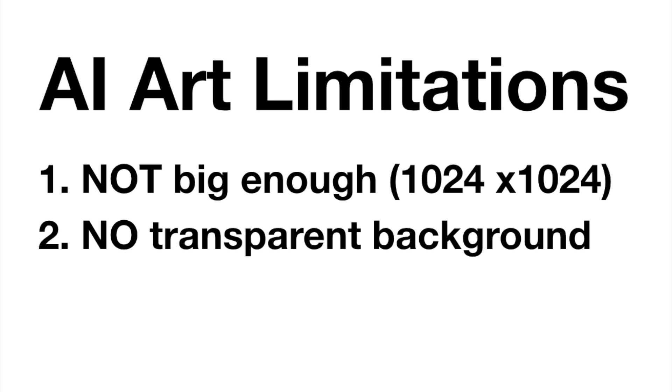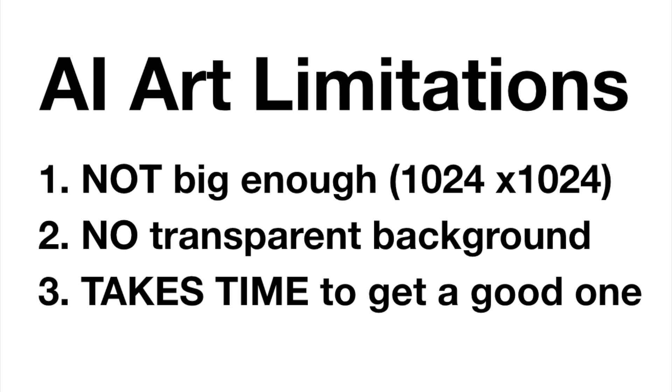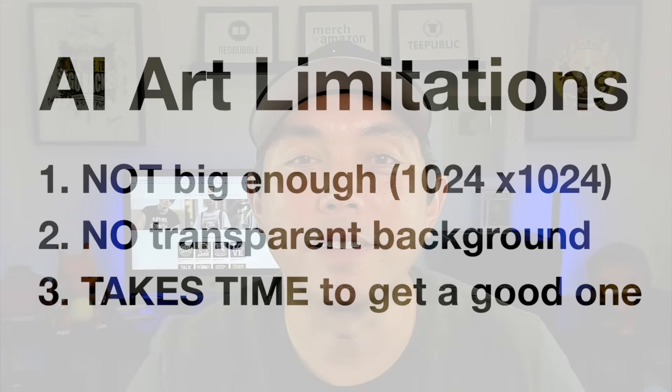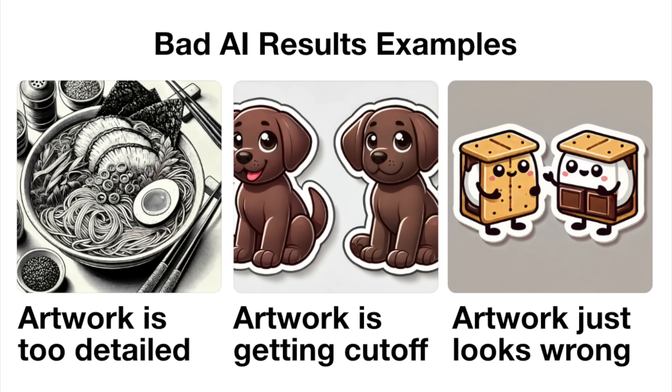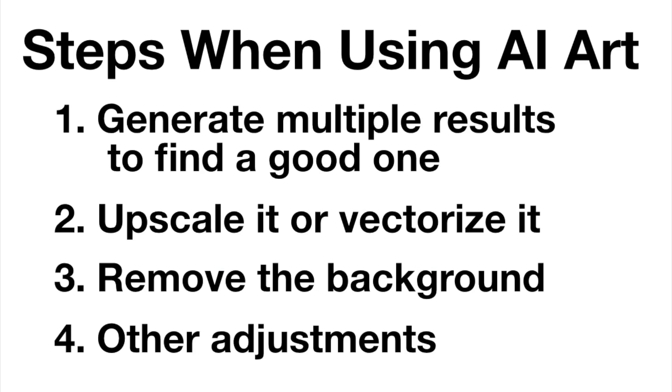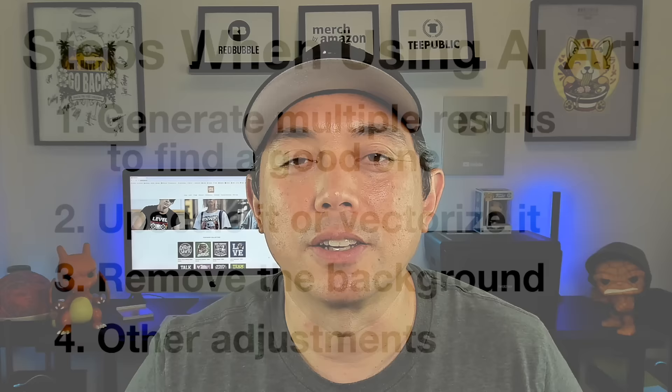There are some limitations on the con side: the output is not big enough, it doesn't have a transparent background, and it usually takes a lot more time to create the right graphic. Even though it generates quickly, not every graphic is something you can use — the quality may not be there, or it didn't do what you actually wanted. Most of the cons on this list relate back to the time issue, because AI doesn't create something right away that you can use for print on demand. There are a lot more steps involved.